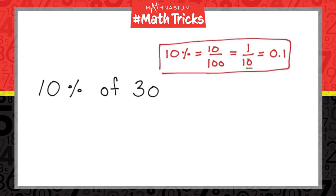Notice that dividing by 10 moves the decimal point one place to the left. When we take 10% of a number, we simply move the decimal place one spot to the left in the original number.